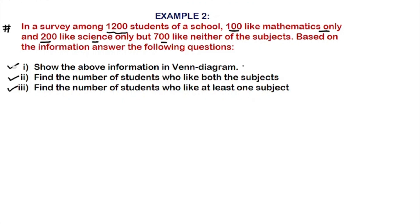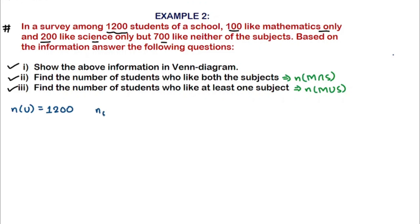The students who like both subjects is denoted by N(M ∩ S), and who like at least one subject is N(M ∪ S) — these are the two things we have to find. First, let's write the given values: total N(U) = 1200, only maths N(only M) = 100, only science N(only S) = 200, and neither N(M ∪ S)' = 700.